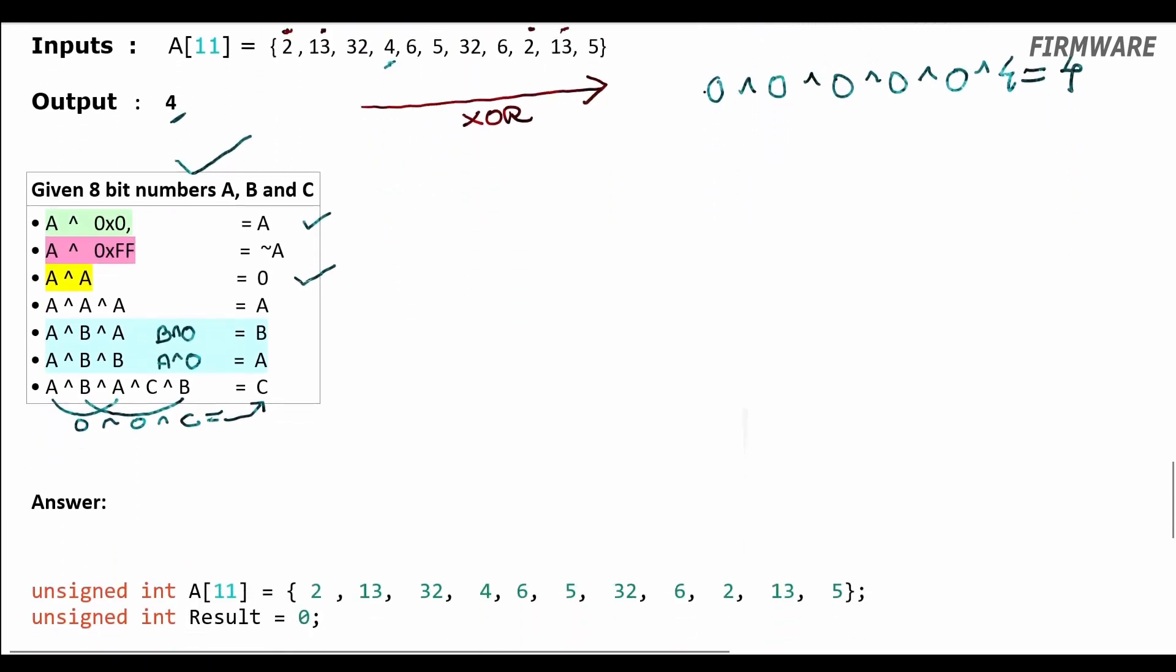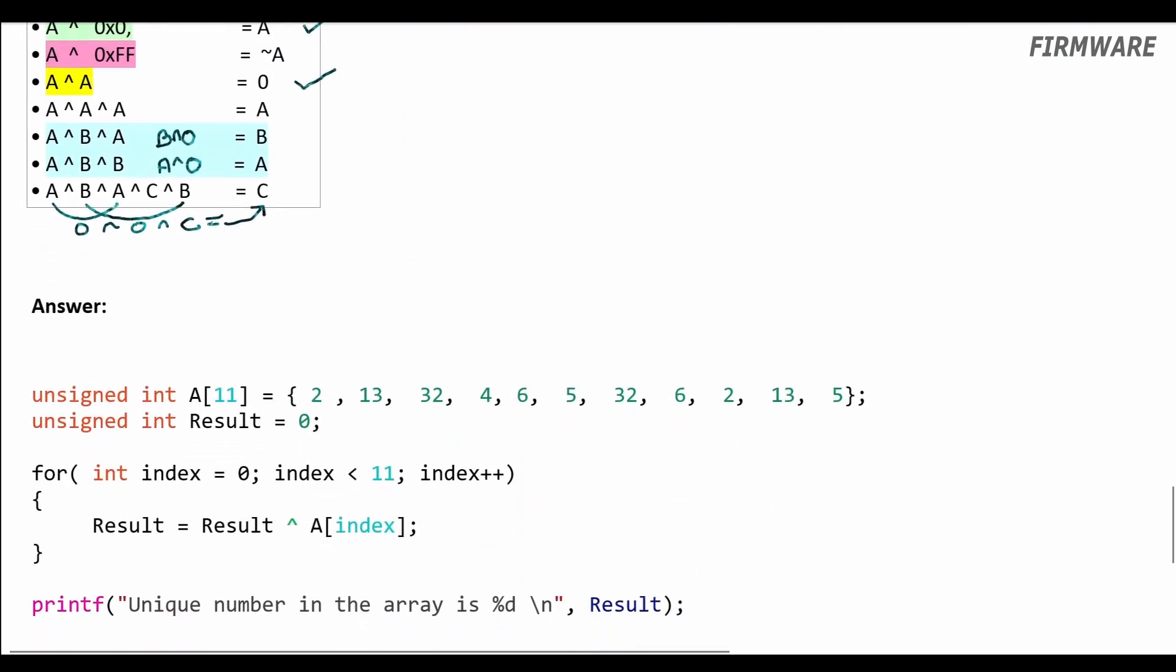Now we have the length 11 array here. The output will be stored in the result variable, which is initialized to zero. This is important—the initialization has to be zero because zero XOR any number results in the same number. Then we can loop across the array, XORing every element. The result will have the element which occurs only once.